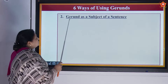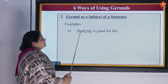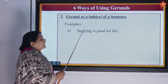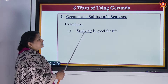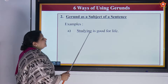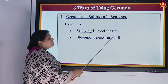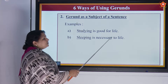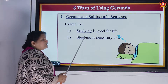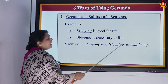The next type is gerund as a subject of a sentence. This is very easy. For example: 'Studying is good for life.' Here studying is acting as the subject of the sentence. Another example: 'Sleeping is necessary to life.' Here, sleeping is acting as the subject. Both studying and sleeping are gerunds used as subjects.